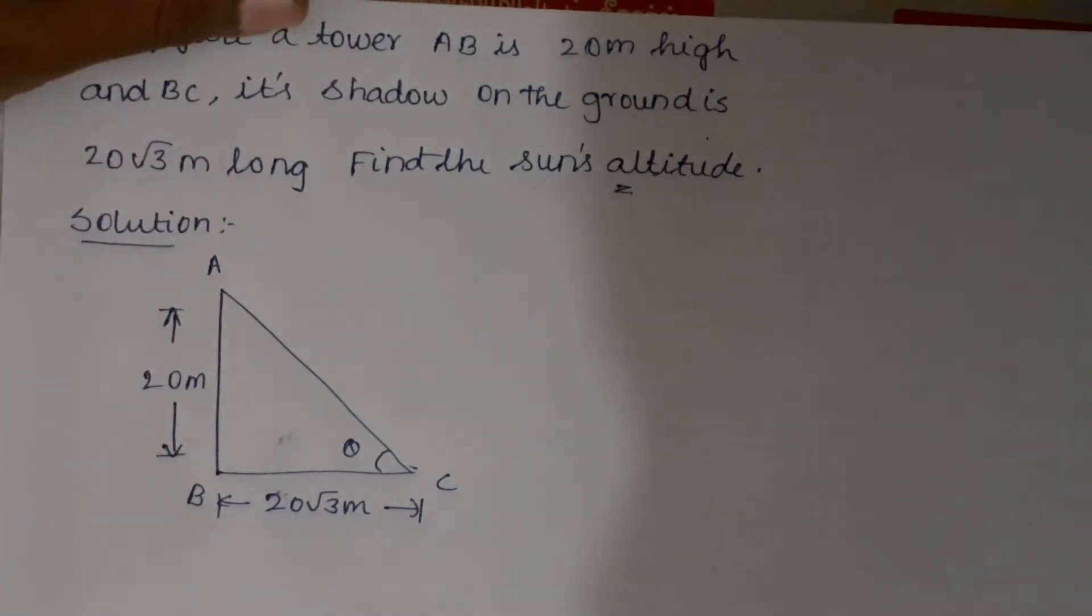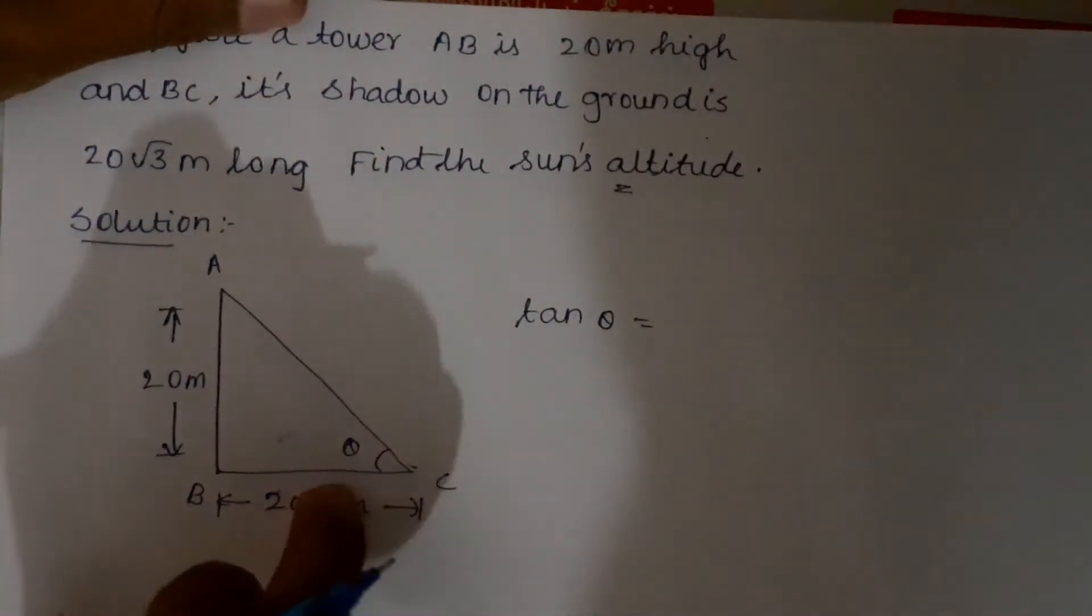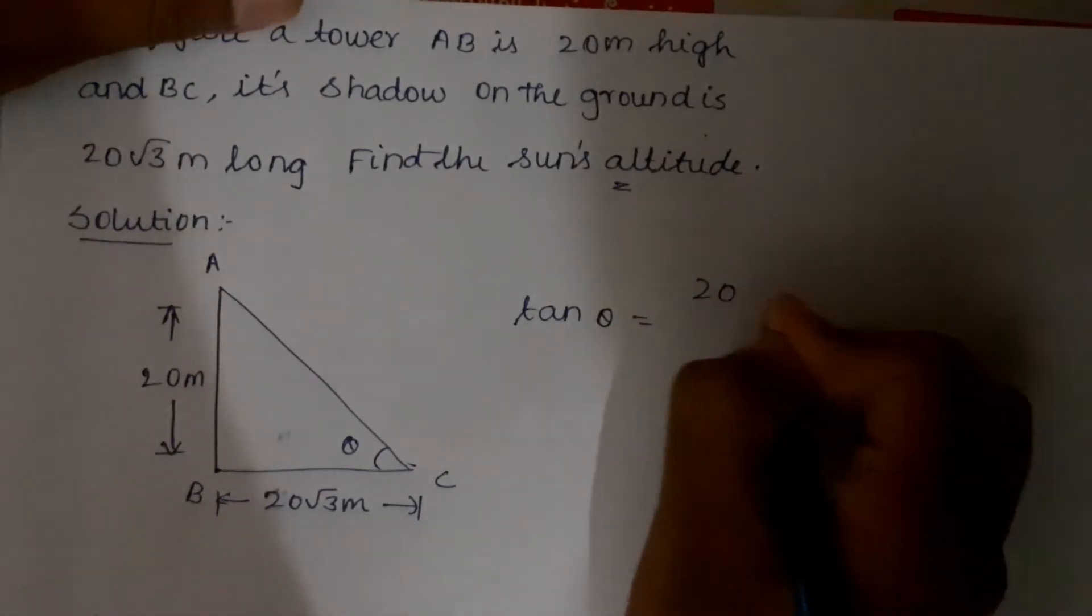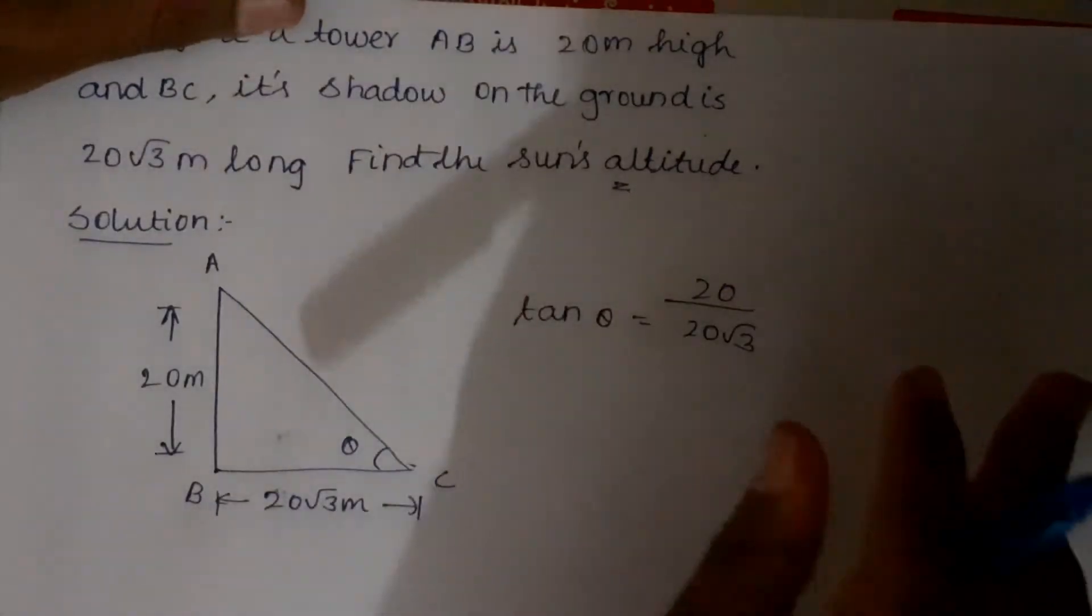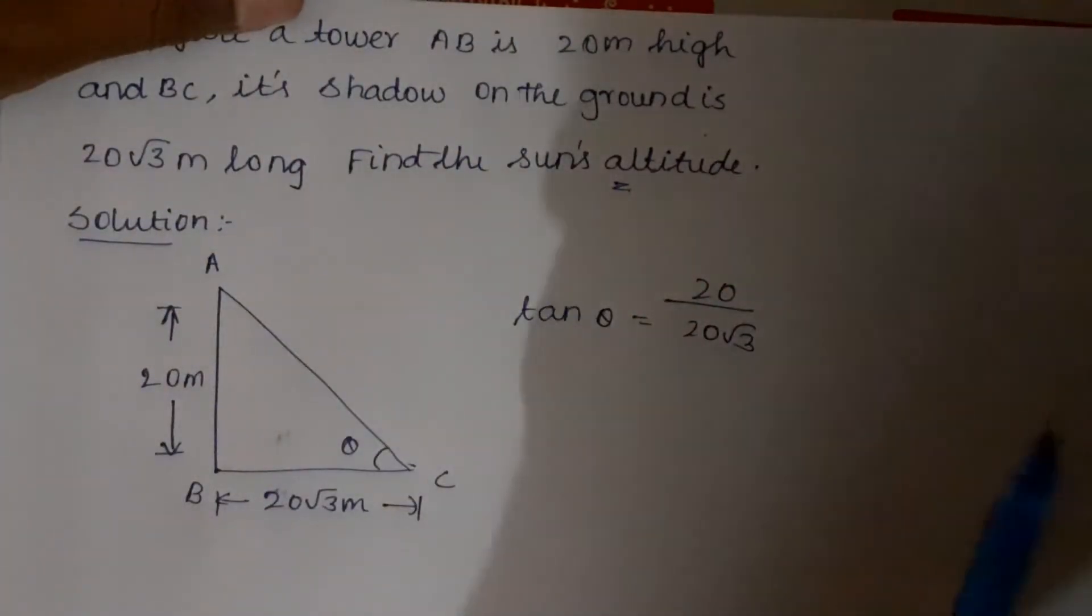tan θ equals opposite side by adjacent side, which is AB/BC = 20/(20√3). Canceling 20 from numerator and denominator gives us 1/√3.